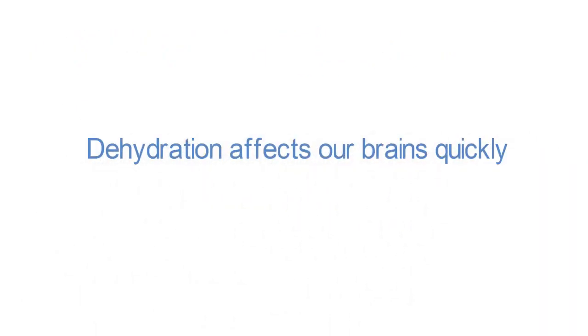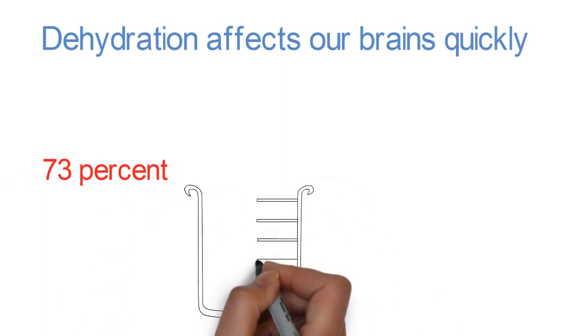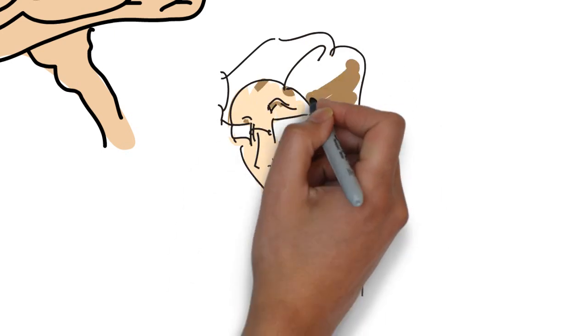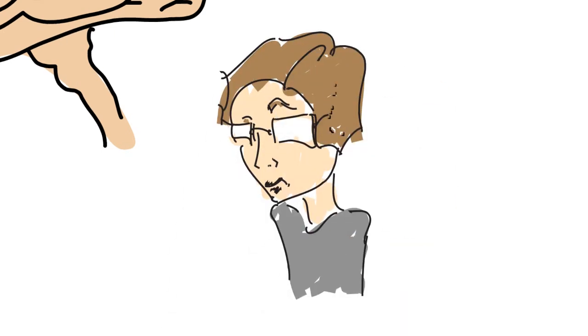Dehydration affects our brains quickly. This is because 73% of human brain is actually water. So losing water from your body can also lead to your brain losing memories. But this is not a very smart way to get rid of bad memories because dehydration not only affects your memory but also your attention and cognitive skills.